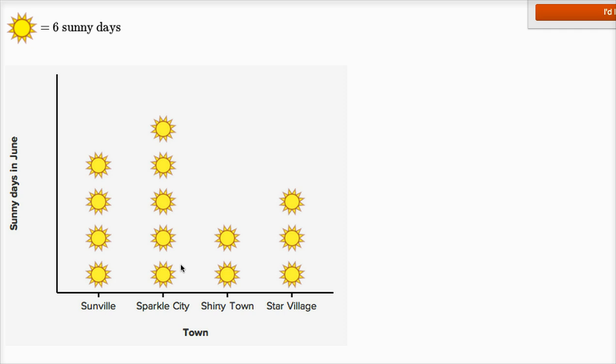Sparkle City had one, two, three, four, five pictures of a sun. Each of those represents six sunny days. So five times six — Sparkle City had 30 sunny days in June.